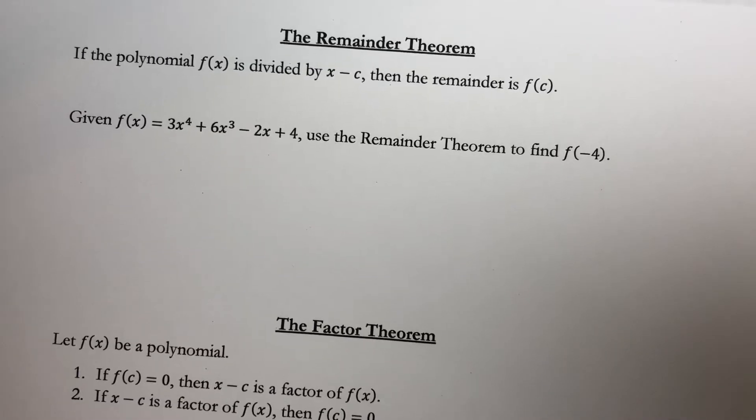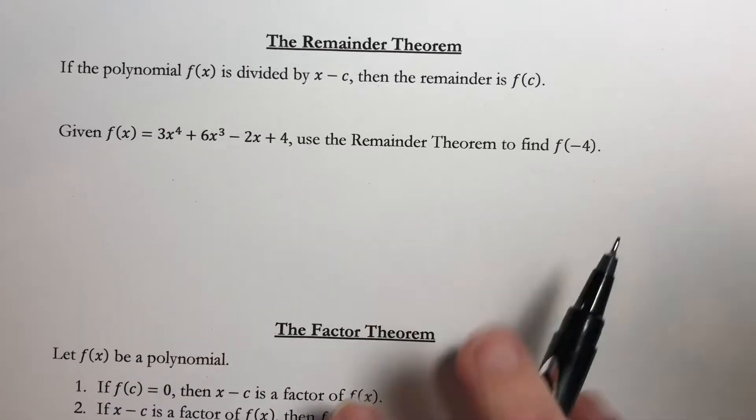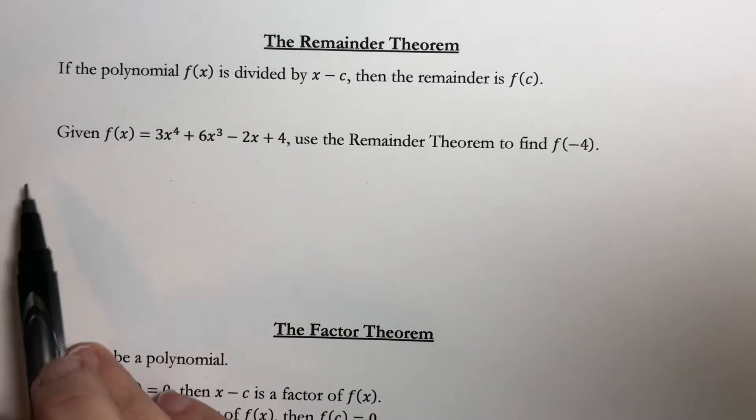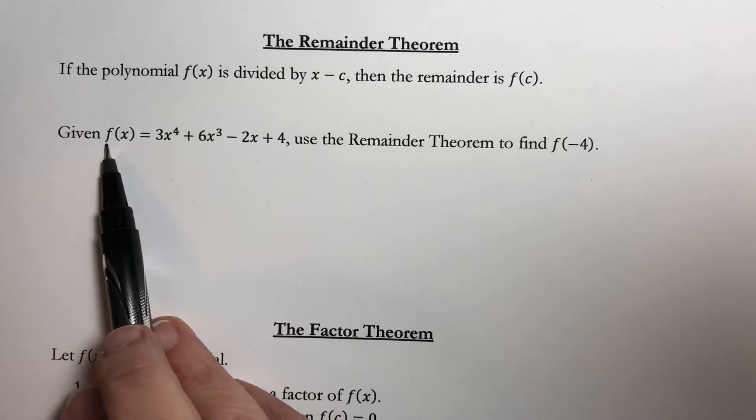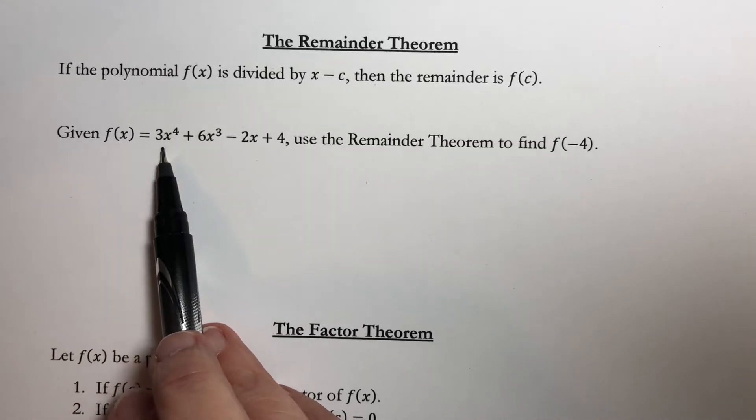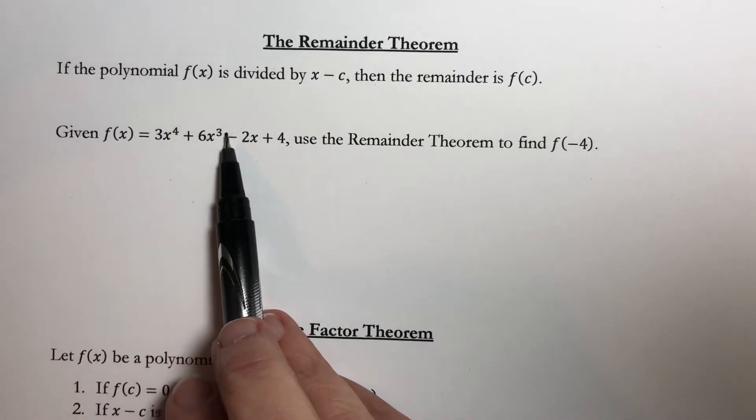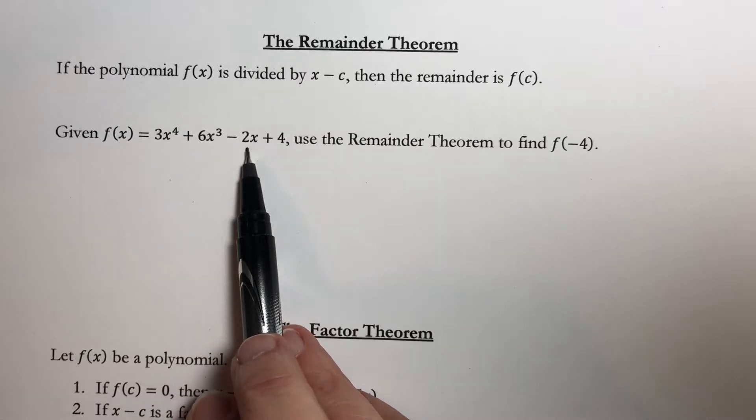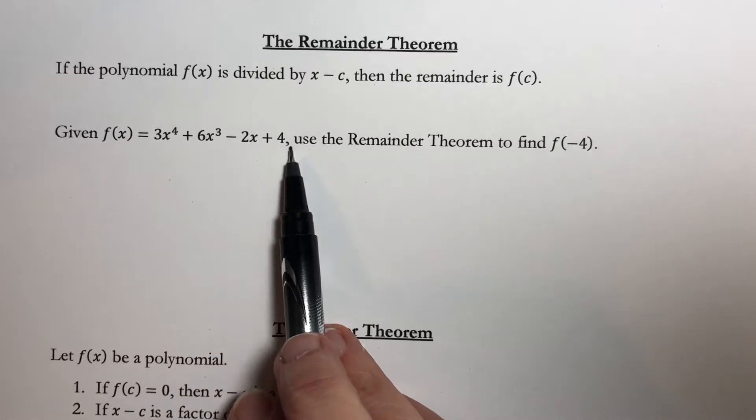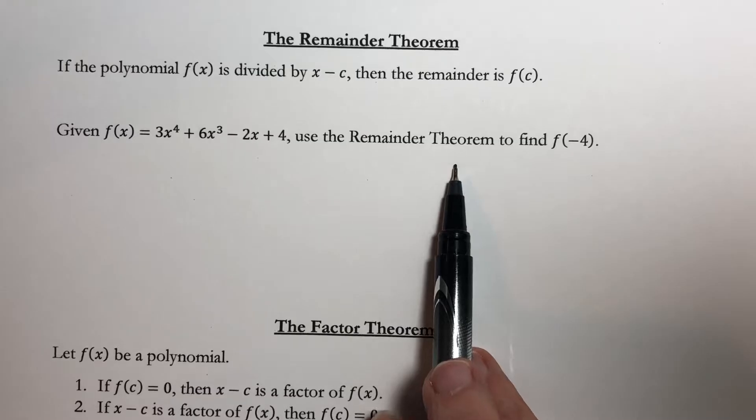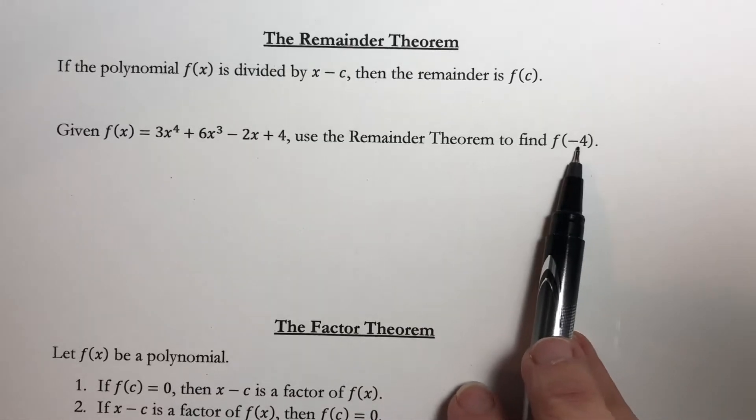Now, this is important in later sections. We're going to be using this to solve equations later. But this particular type of problem says given f(x) equals 3x to the 4th plus 6x cubed minus 2x plus 4, use the Remainder Theorem to find f(−4).